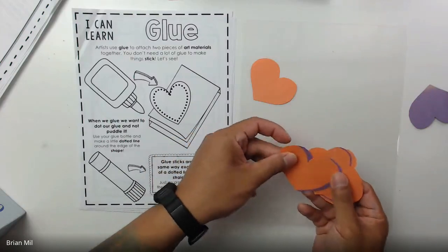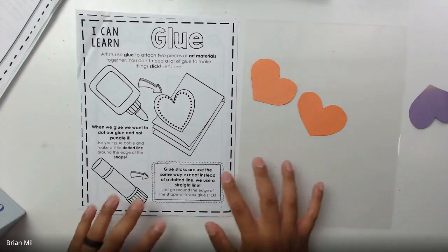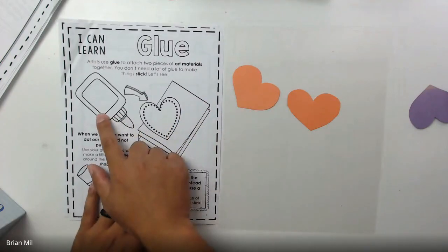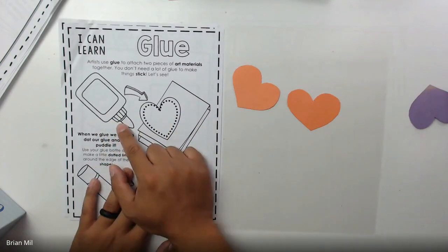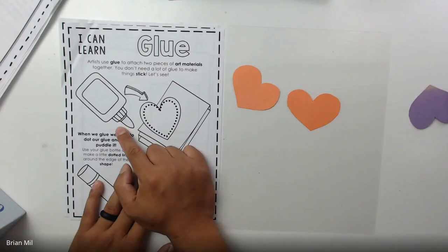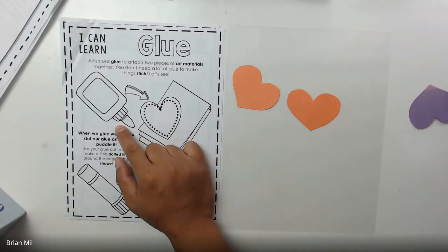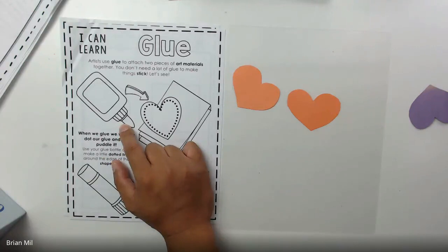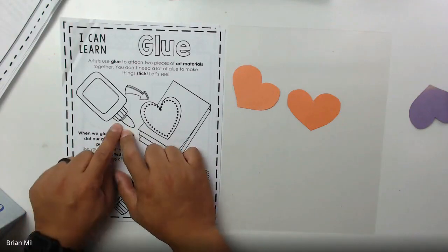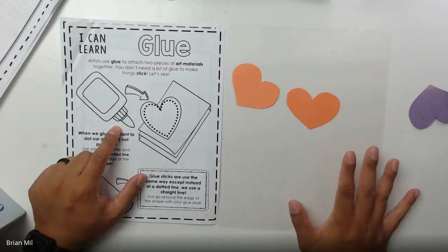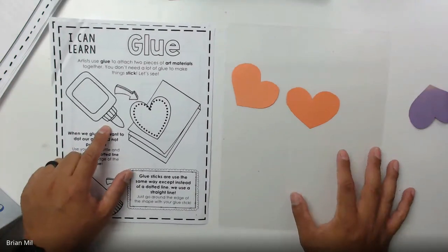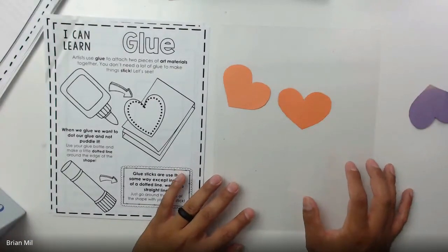Now before I get started, this is a picture of Elmer's glue. Can anyone tell me what color Elmer's glue is normally? Luke, do you know what color glue is? White, yeah good job! The reason why I'm not going to be using Elmer's glue is because my table's white and it'll be really hard to see on camera. So what I'm going to do is something a little bit more creative.